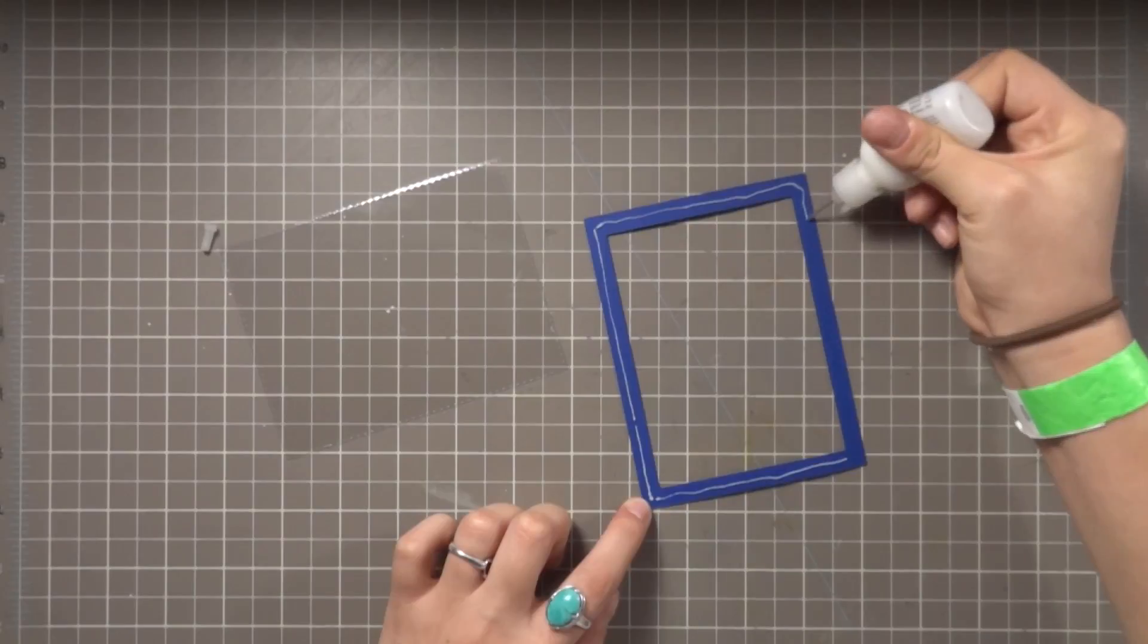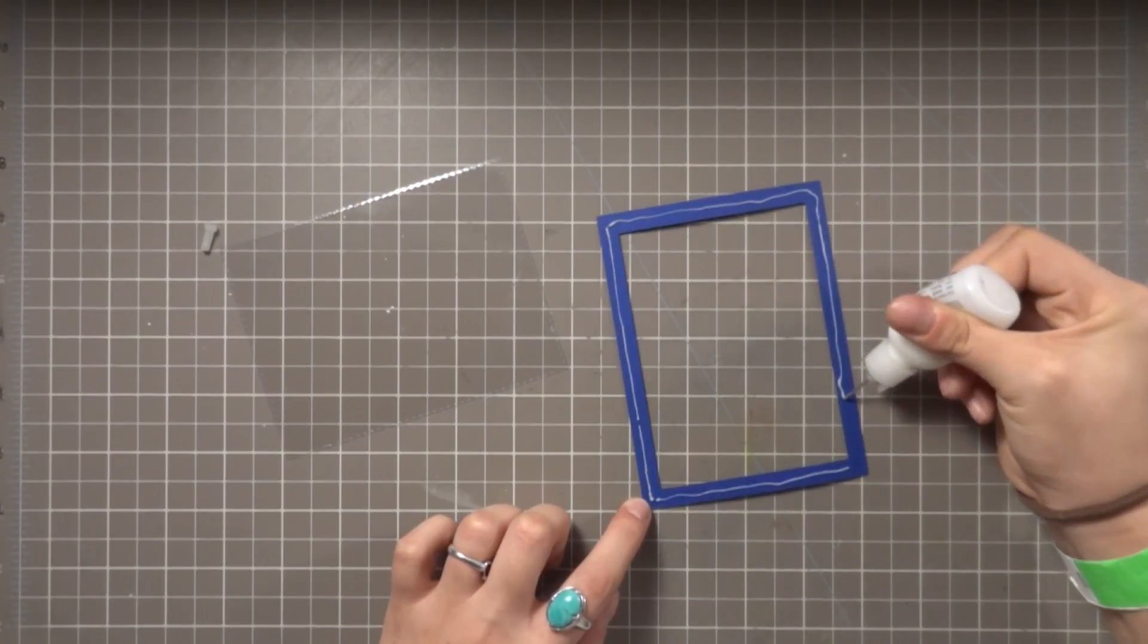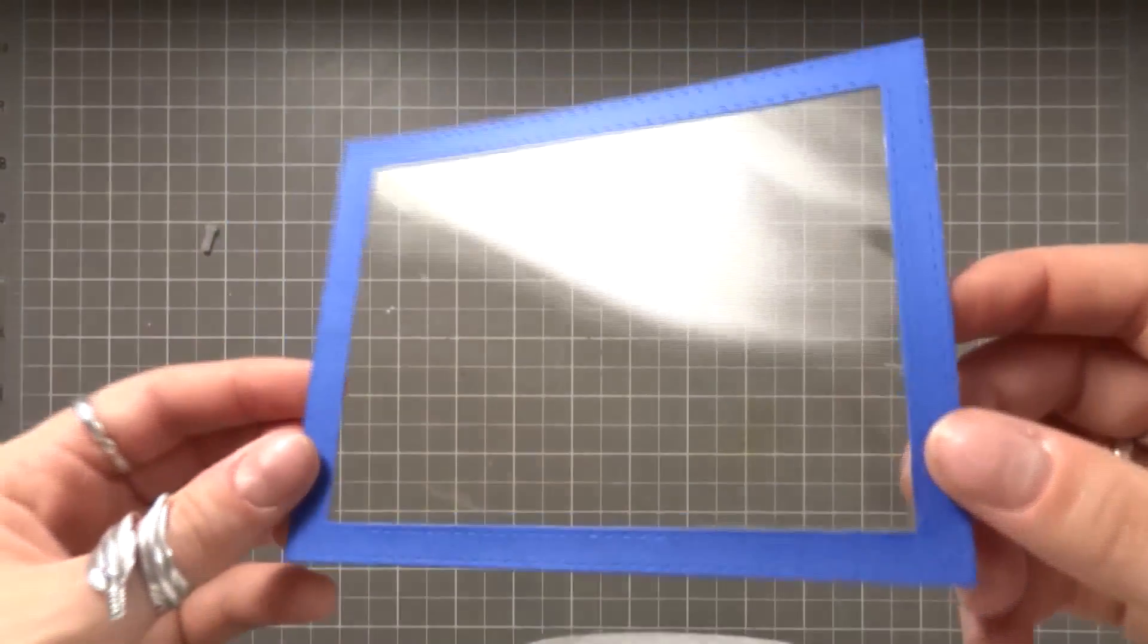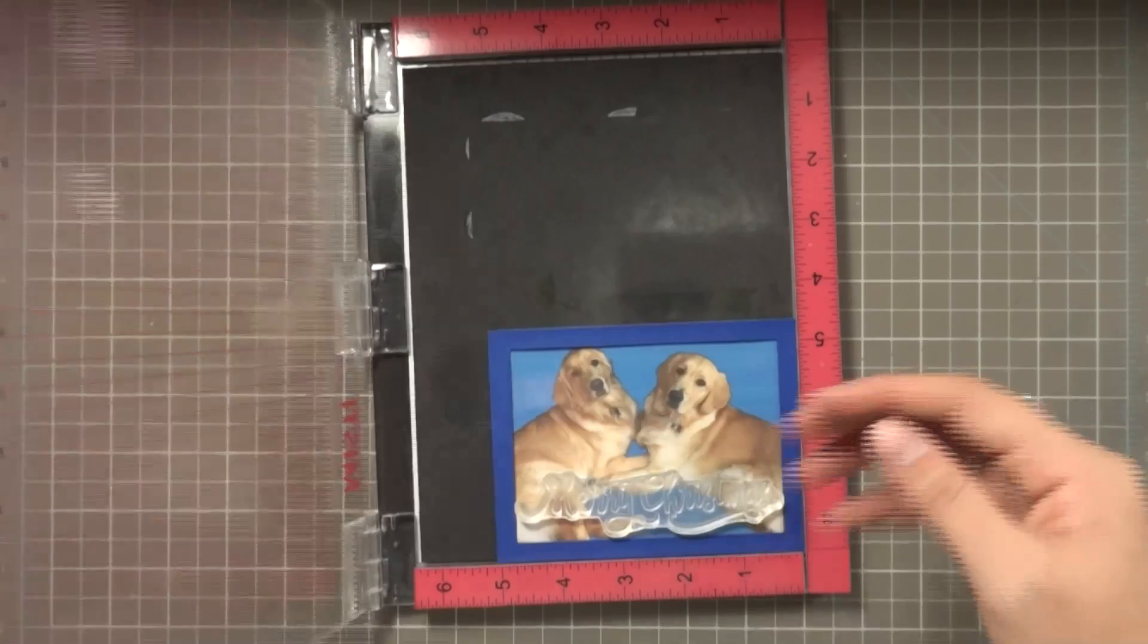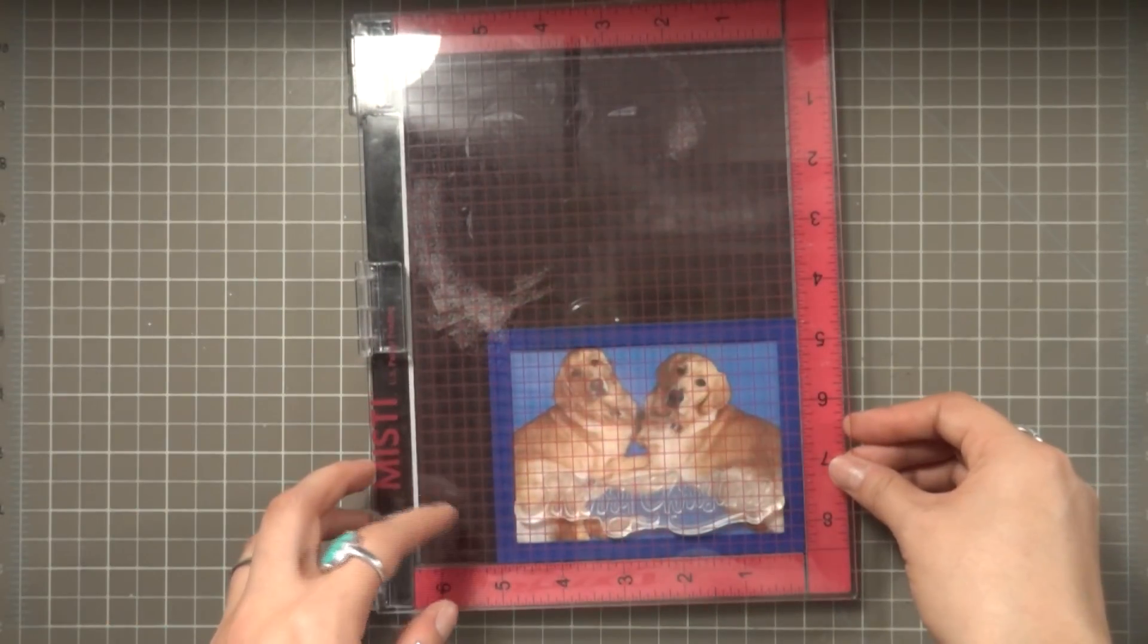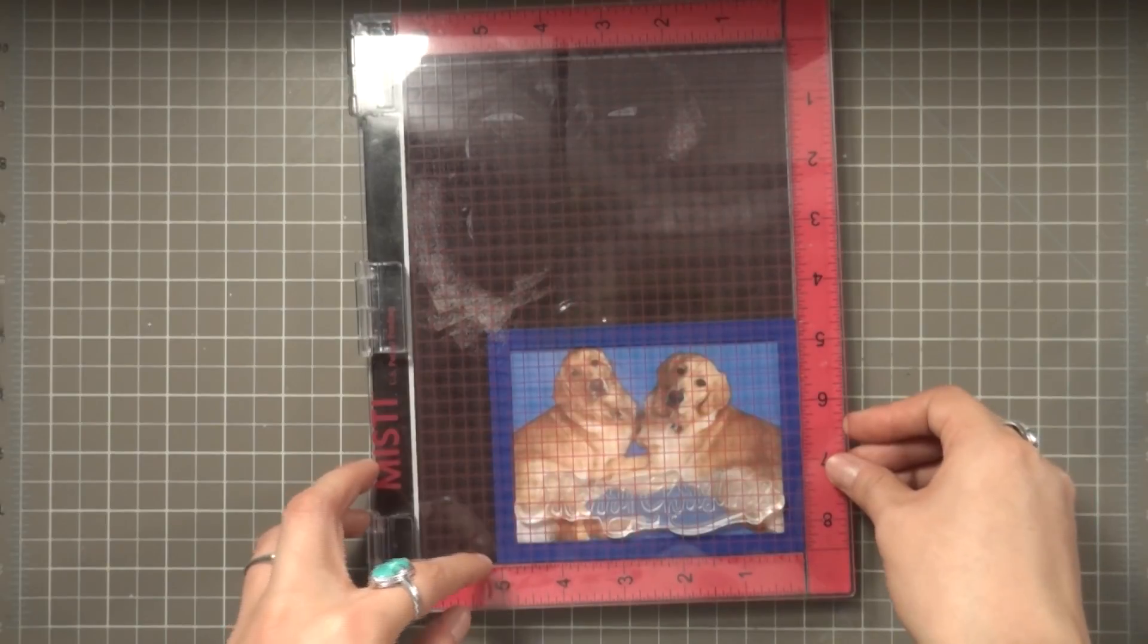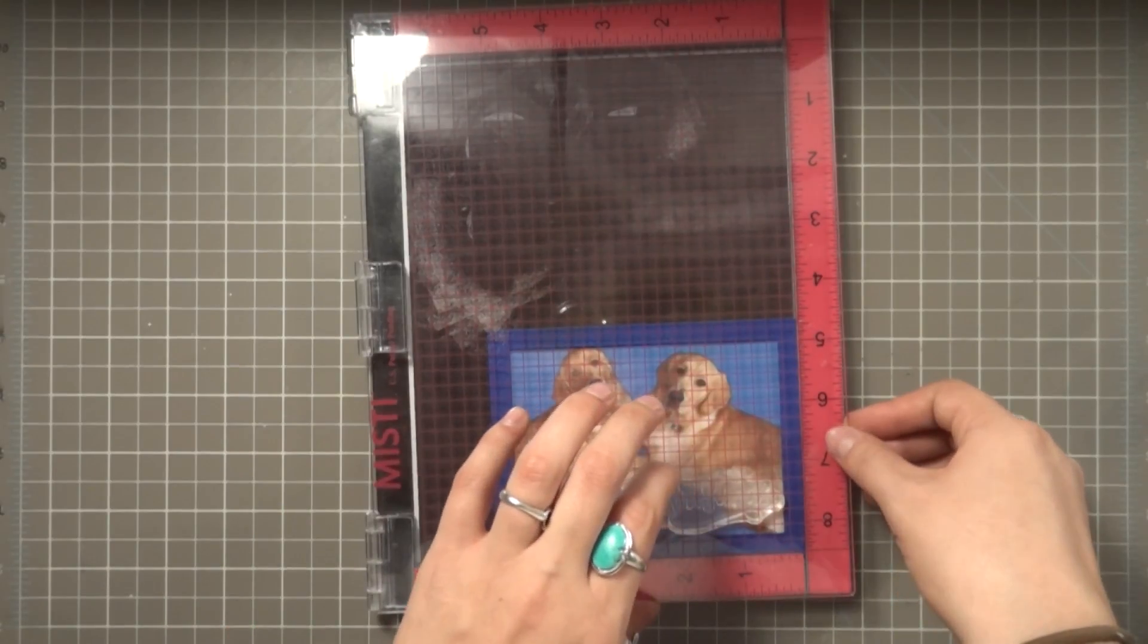I've cut a piece of acetate using the largest rectangle die and I'm now adhering it to the top border using my multi matte medium. I'm lining up my sentiment in my MISTI stamping tool and I've put my picture behind the acetate in the border to give me an idea of where I want to place my sentiment.